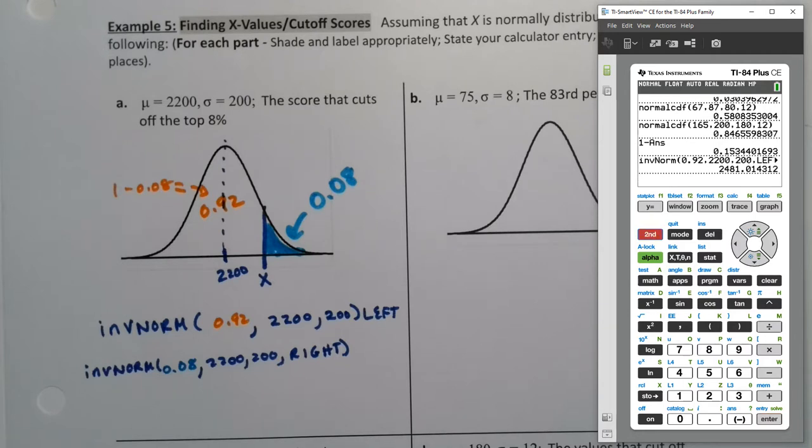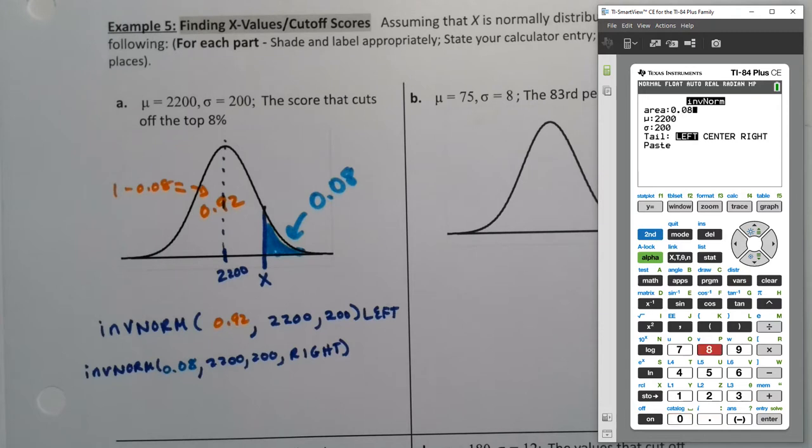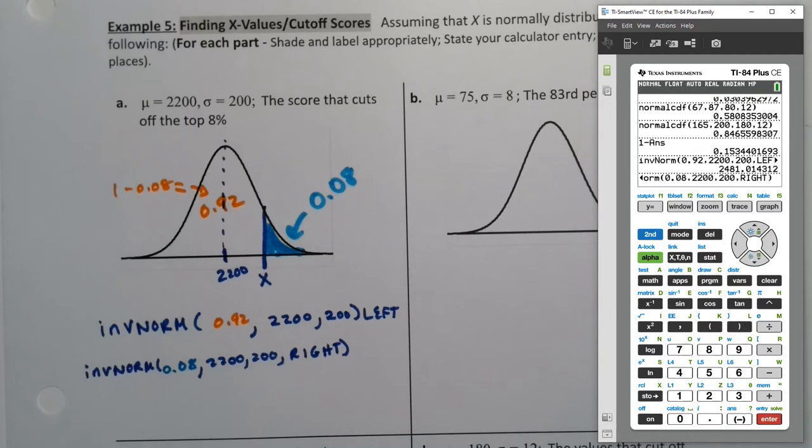If I do it again, second distribution, number three, and I say 0.08, and I go down here, and I choose right, and again, not everybody has that option, but if you do, you can try that. You don't have to do both of them. Just pick one, right? There you go. See? 2,481.